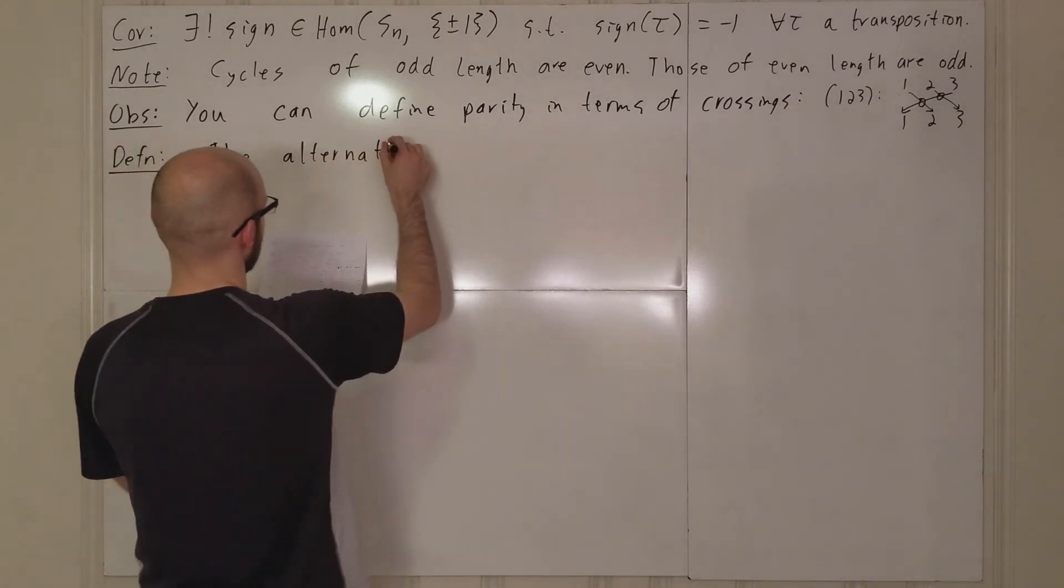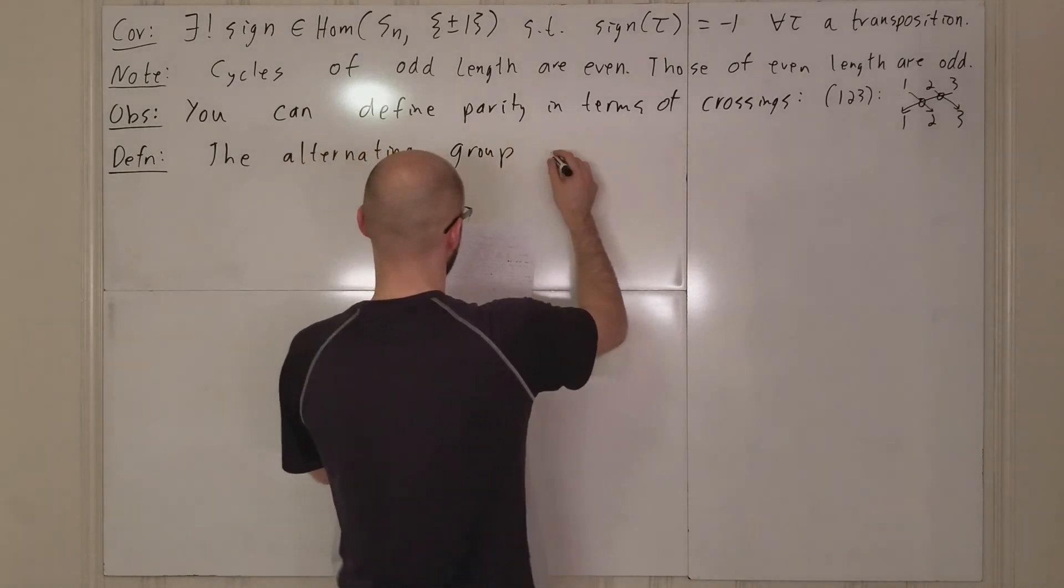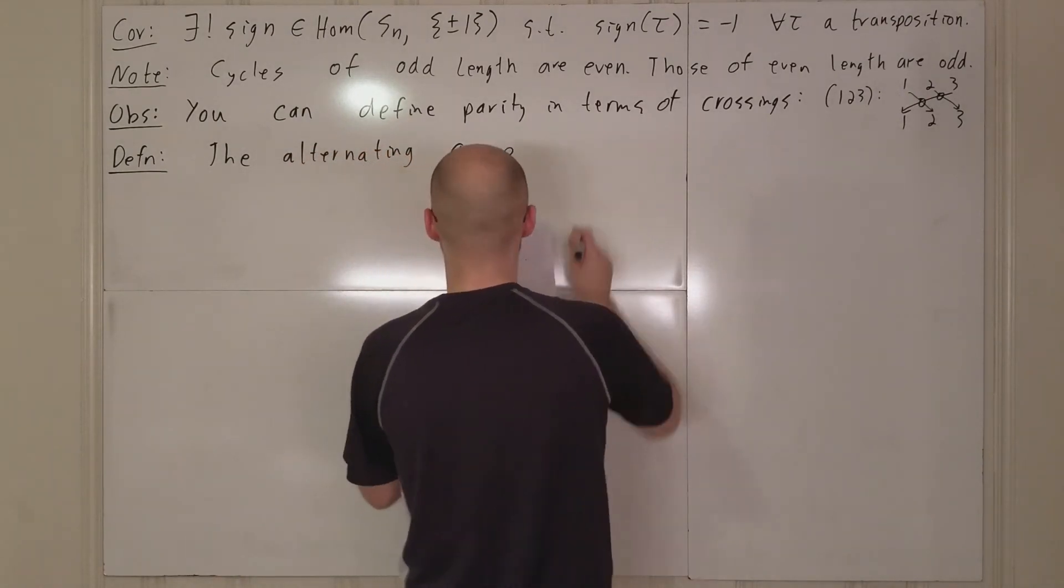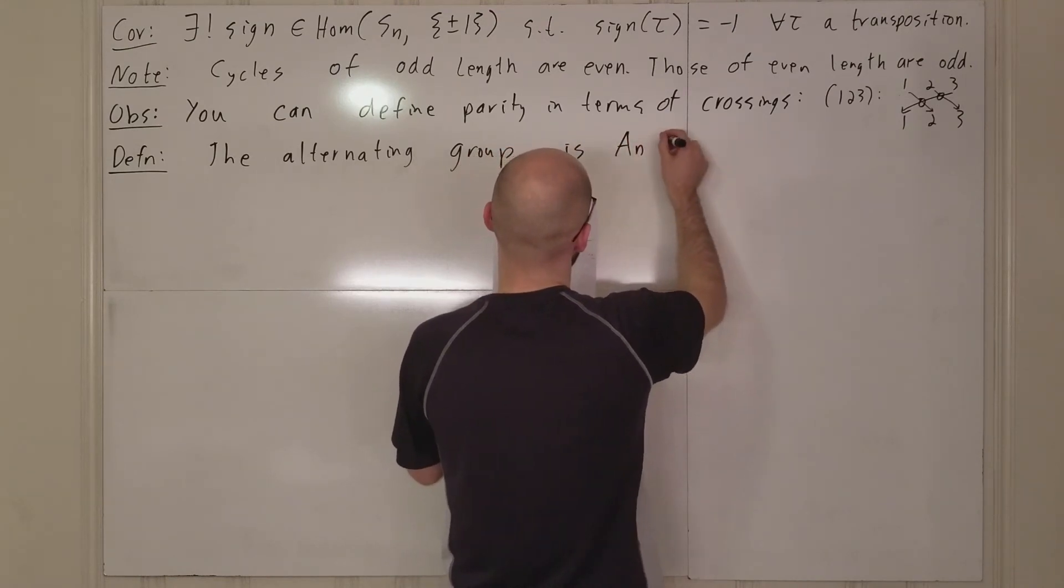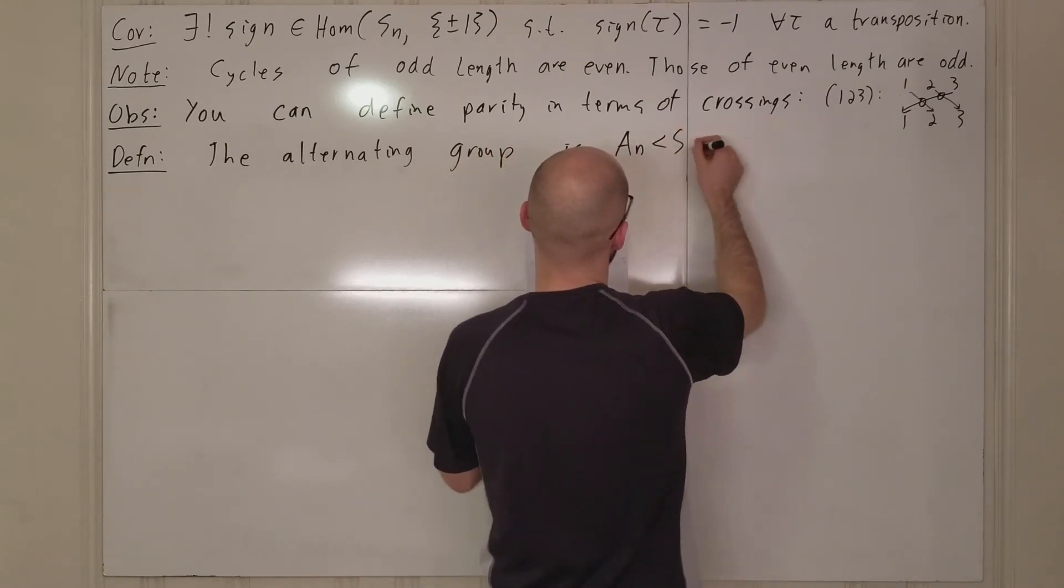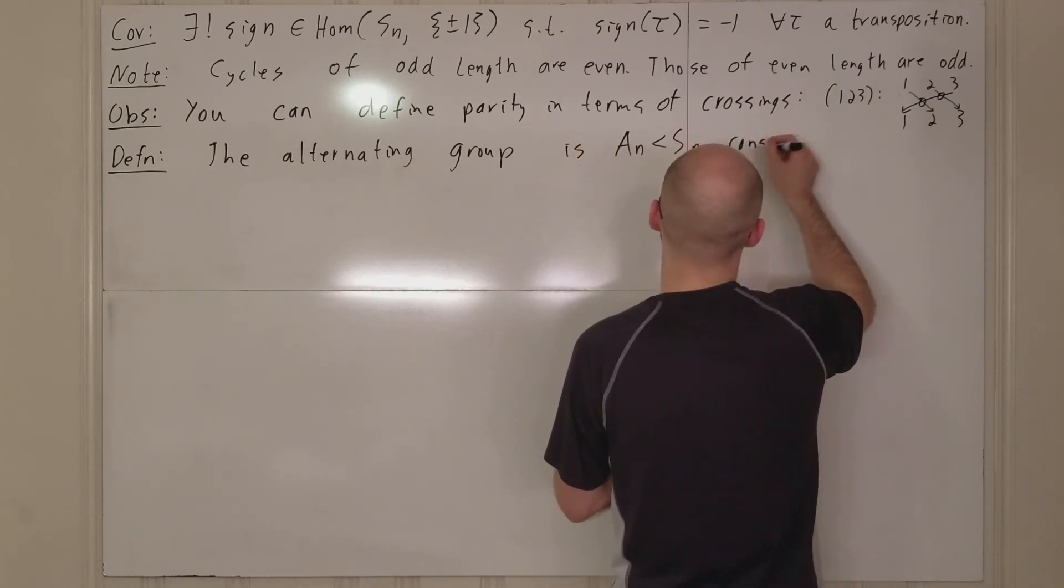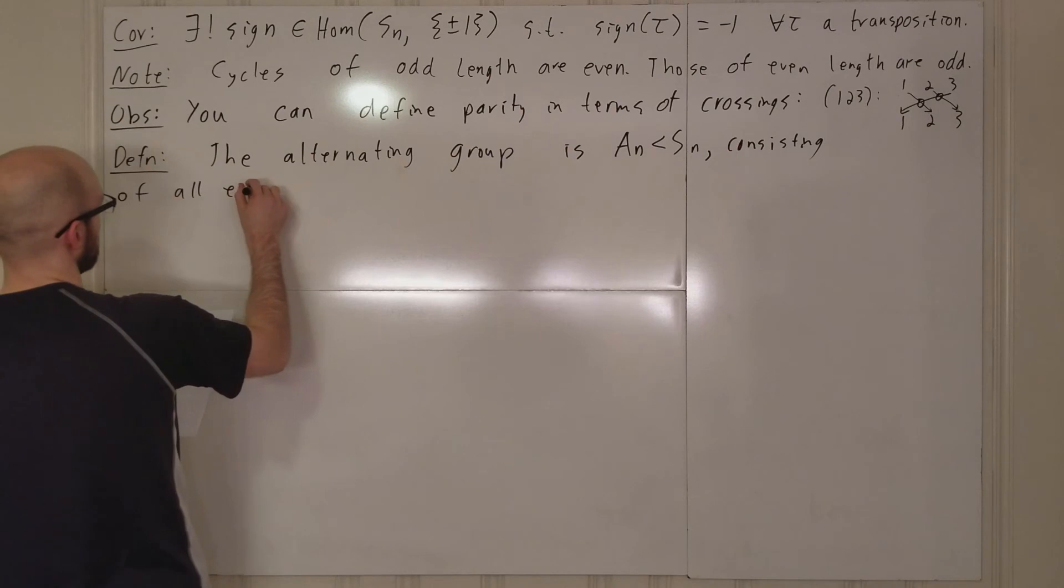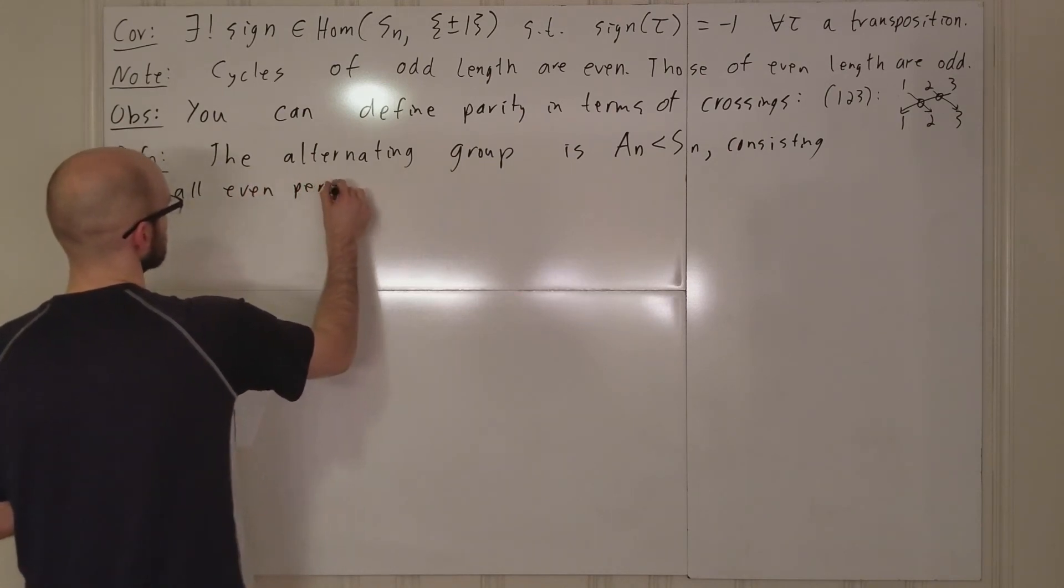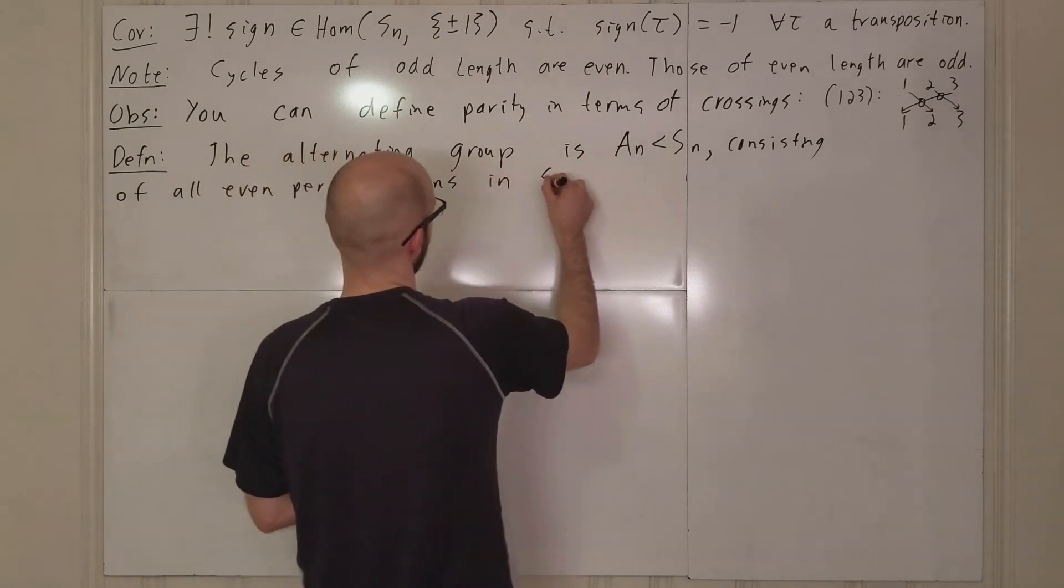Okay. But, for us, we're going to find the alternating group. Is An a subgroup of Sn consisting of all even permutations in Sn.